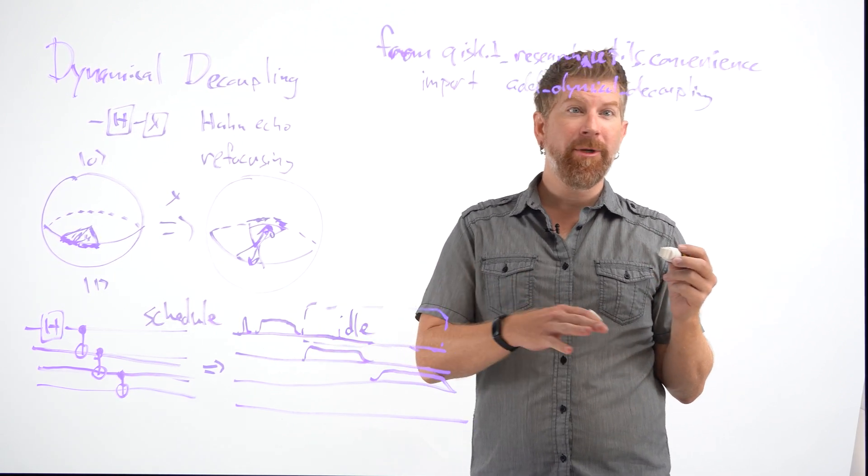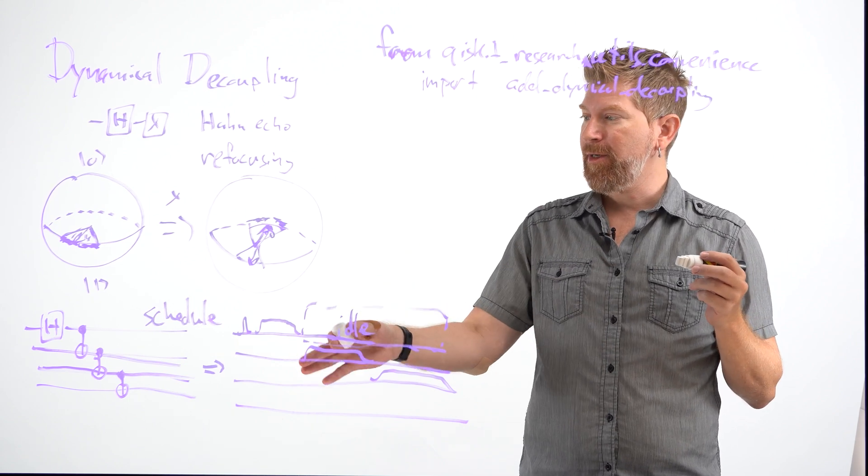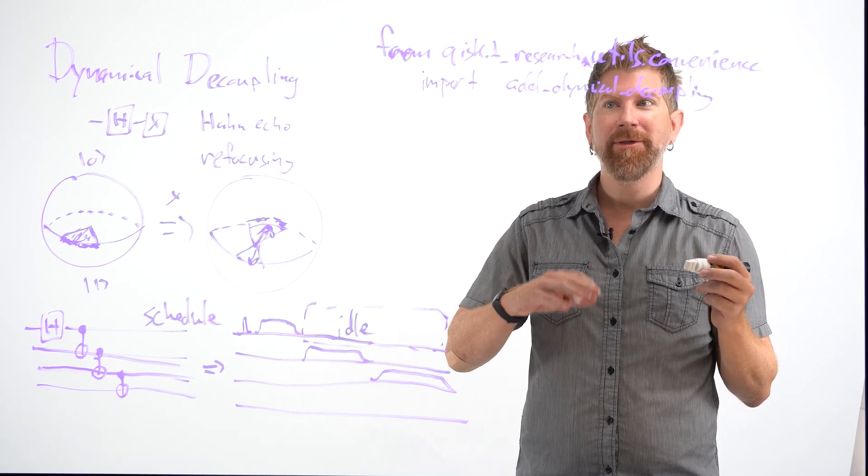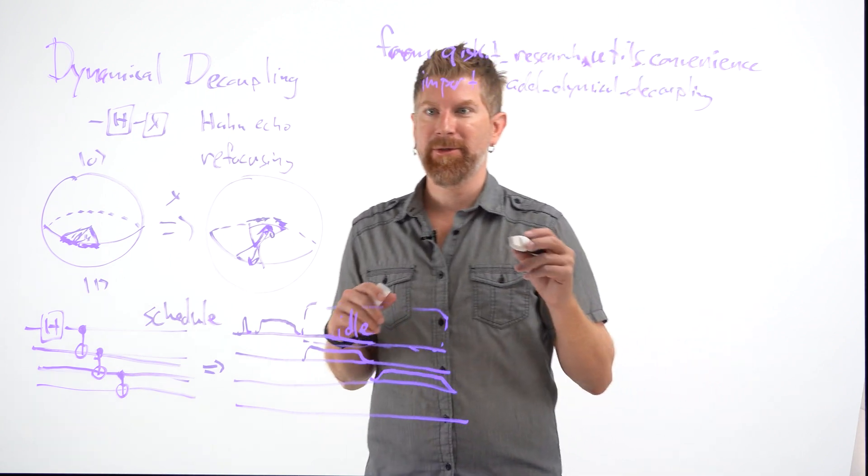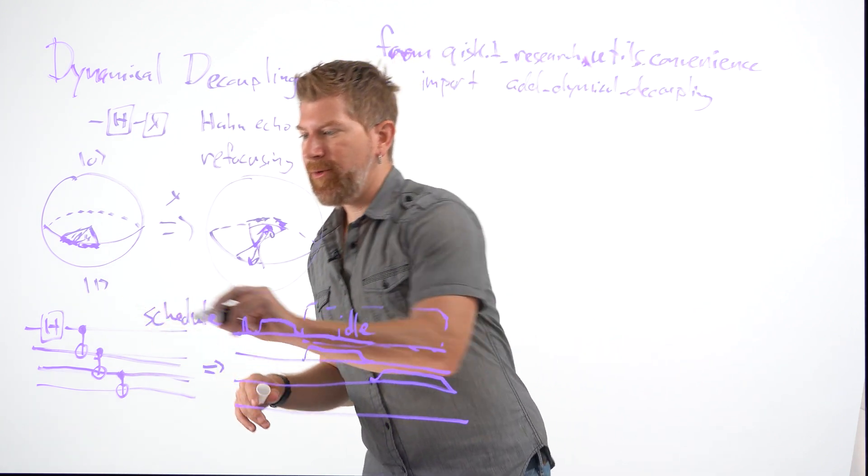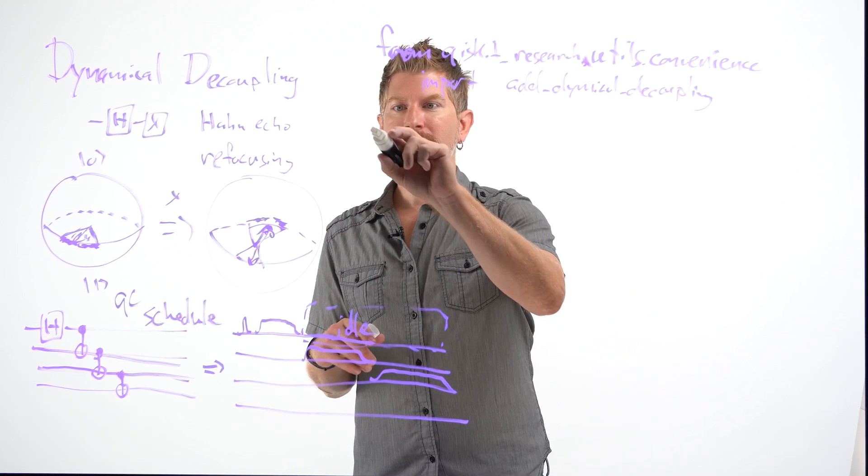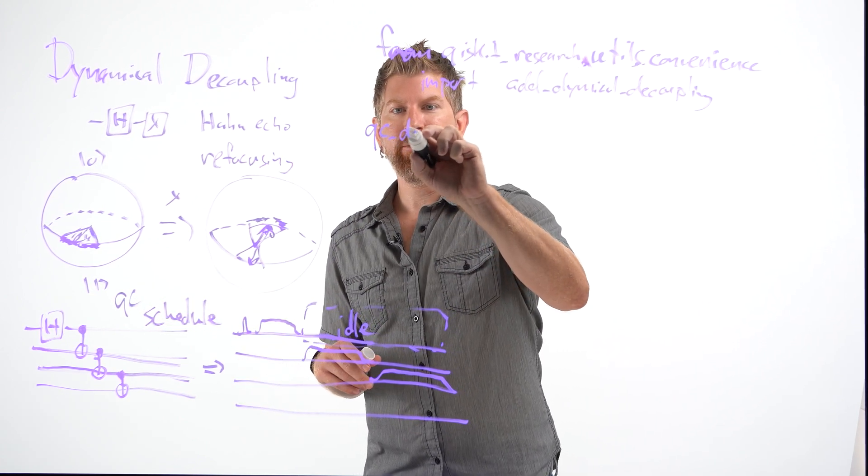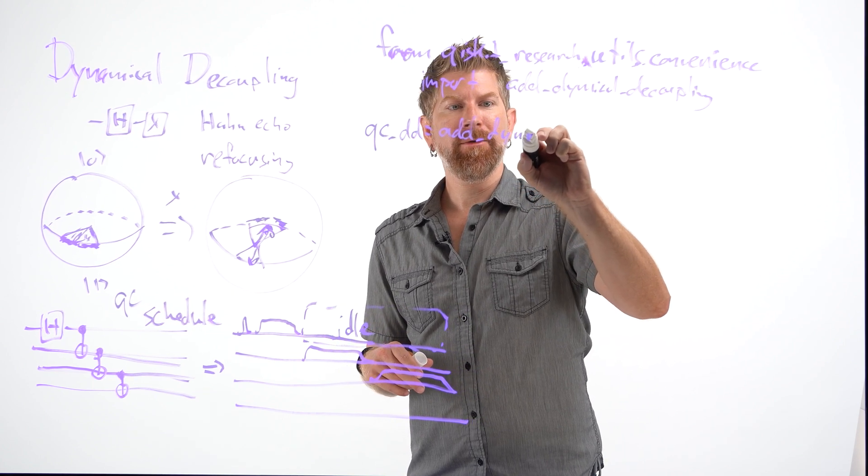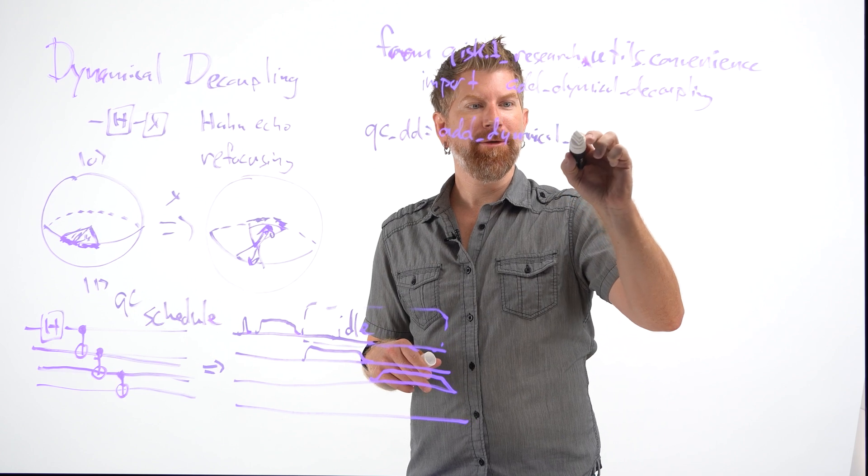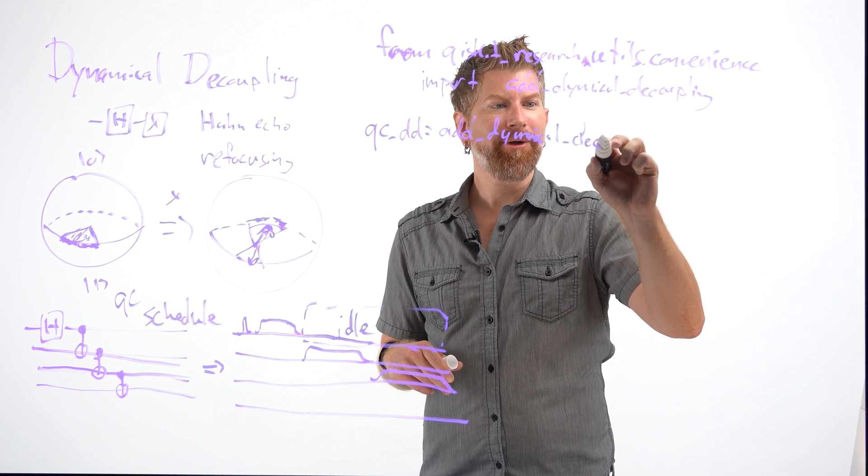So there's a lot of pulse and timing information that goes into adding these dynamical decoupling pulses. And Qiskit makes it easy. And Qiskit research makes it easier to add even more complicated pulse sequences. So what we can do is if we have this sequence, we call it QC. We can build a new sequence. We call QCDD. And it equals add dynamical decoupling.